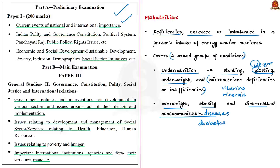India is a fast-growing economy and also has the largest anti-malnutrition program to tackle child malnutrition — the ICDS, or Integrated Child Development Services Scheme. Though we have had this scheme for a long period of time, India is still among the nations with the world's worst levels of child malnutrition. According to national and international studies, India's performance on key malnutrition indicators is considered poor.